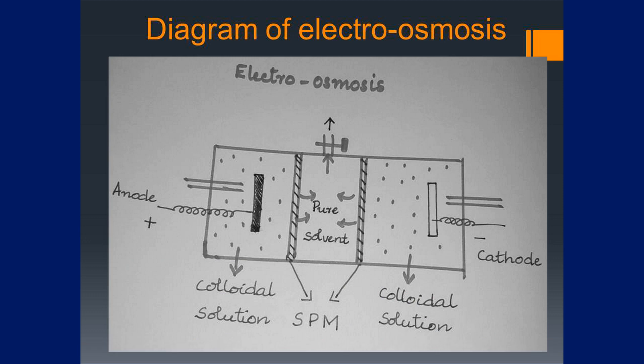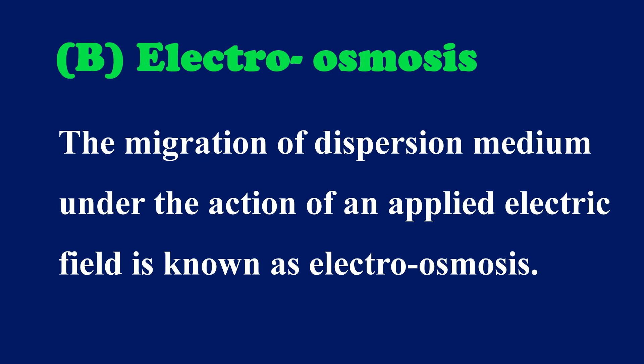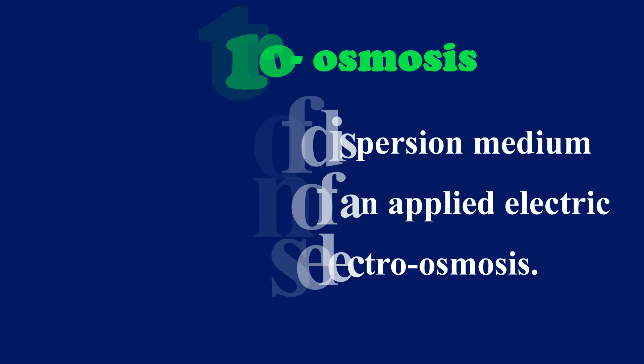The next process is electroosmosis. Electroosmosis is the opposite process to electrophoresis. Here the migration of the dispersion medium occurs in the presence of an electric field. The migration of the dispersion medium under the action of an applied electric field is known as electroosmosis.